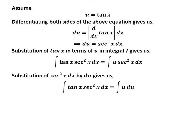As we found out, square of secant of x times differential of x is equal to differential of u. So, replacing square of secant of x times differential of x by differential of u gives us integral of tangent of x times square of secant of x is equal to integral of u with respect to u.